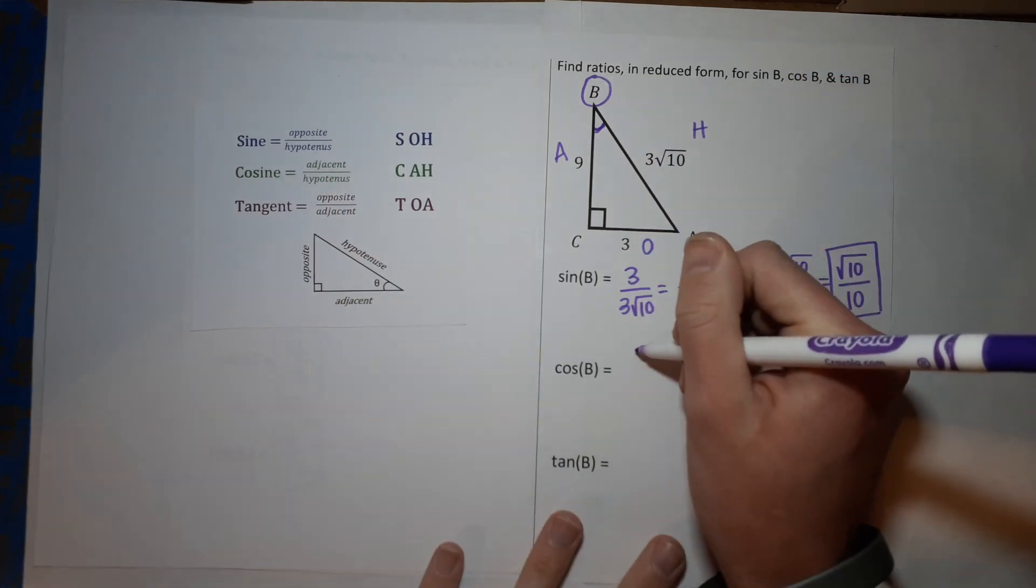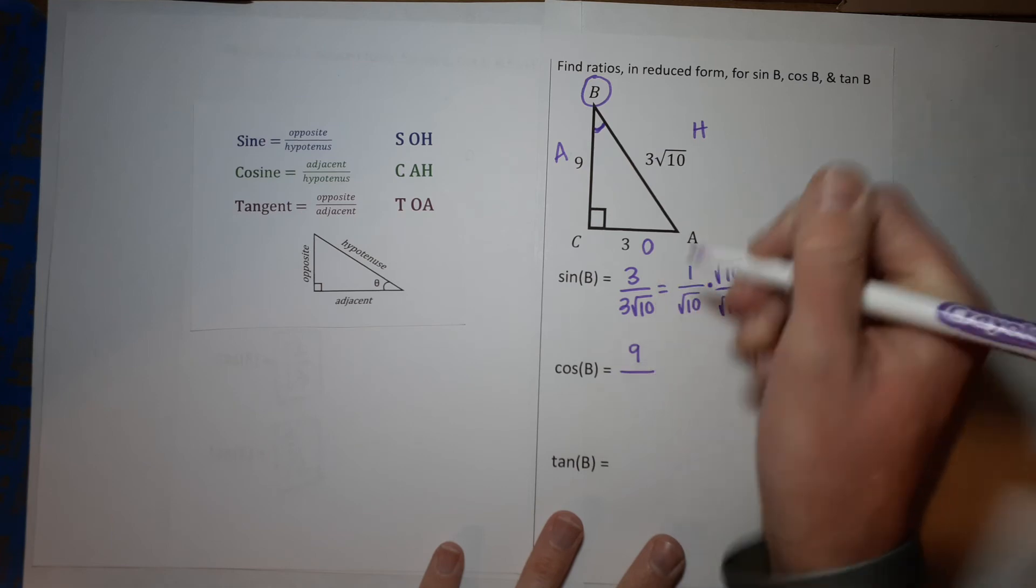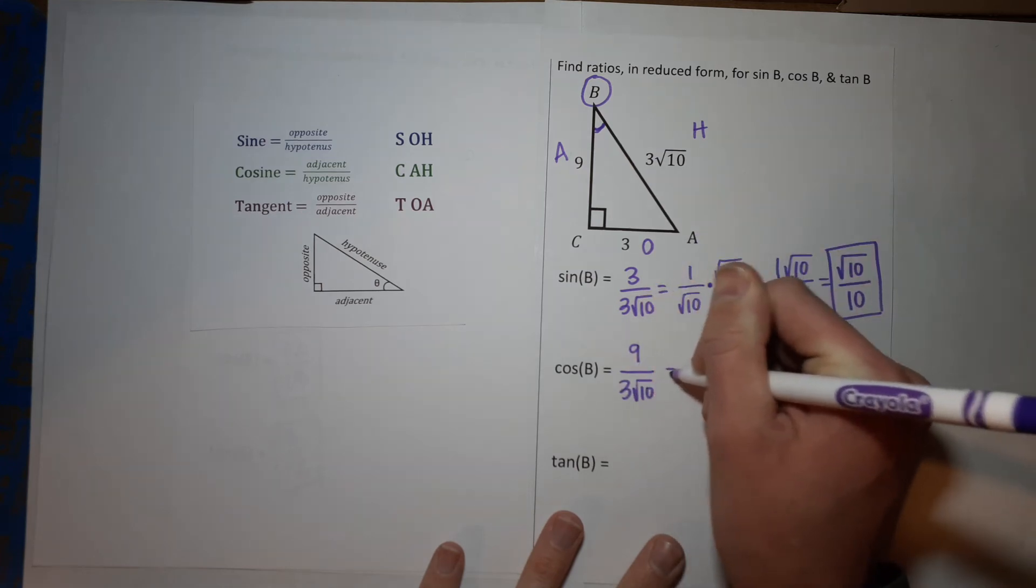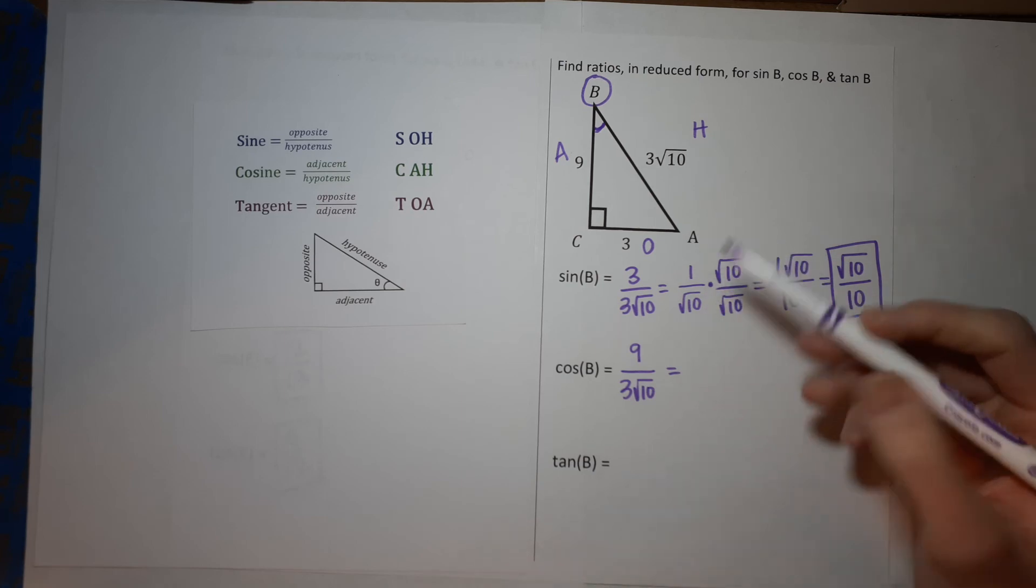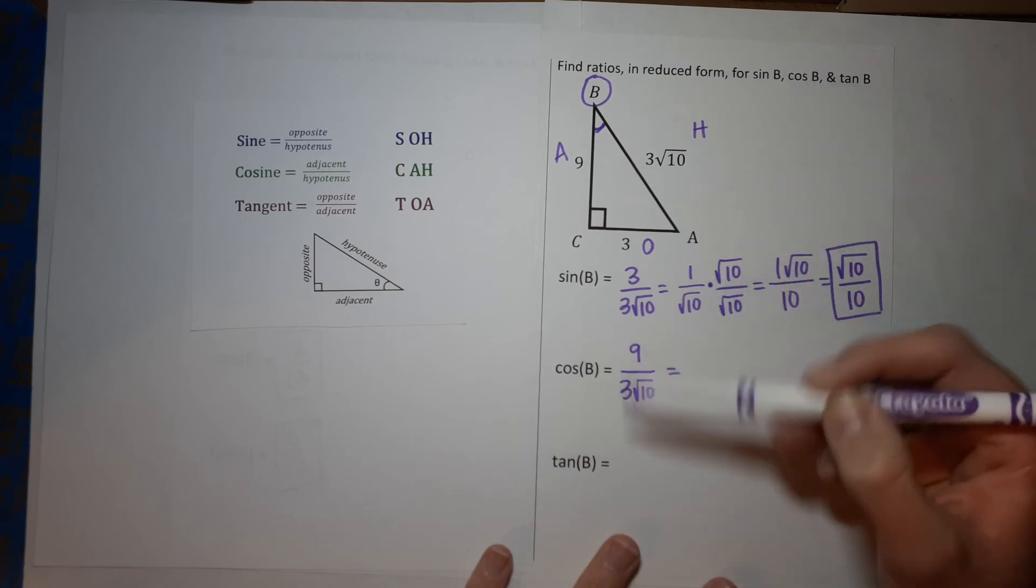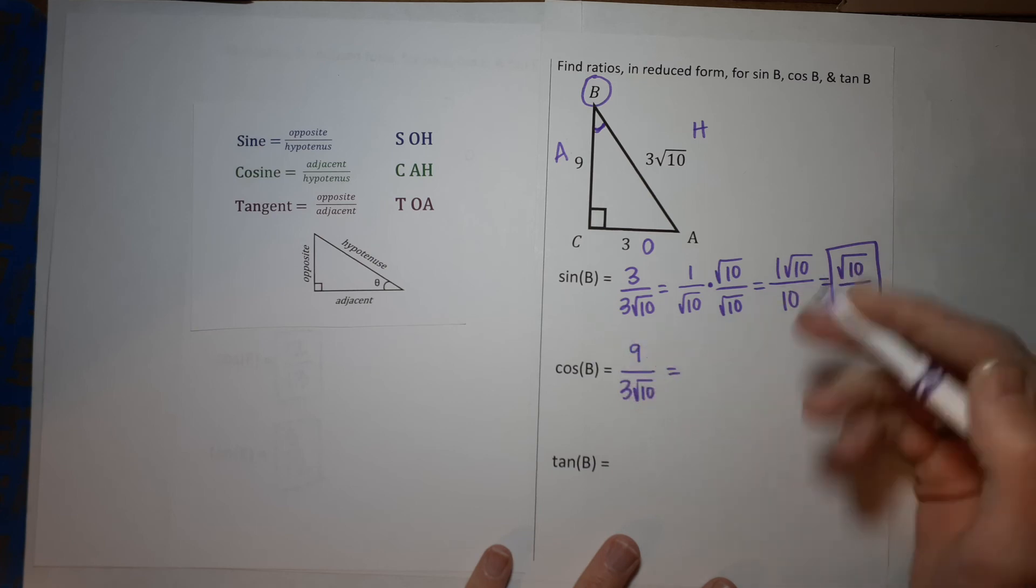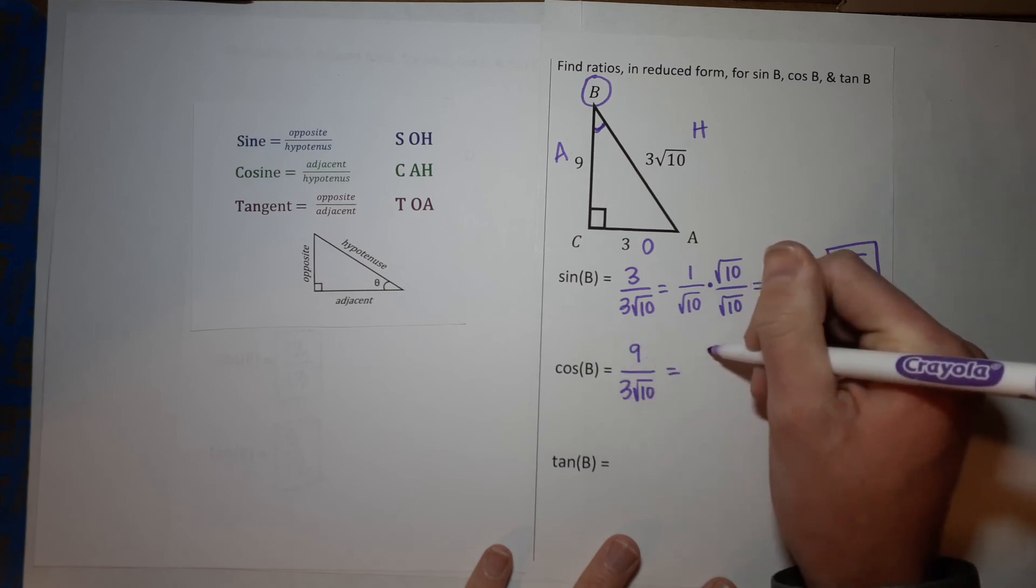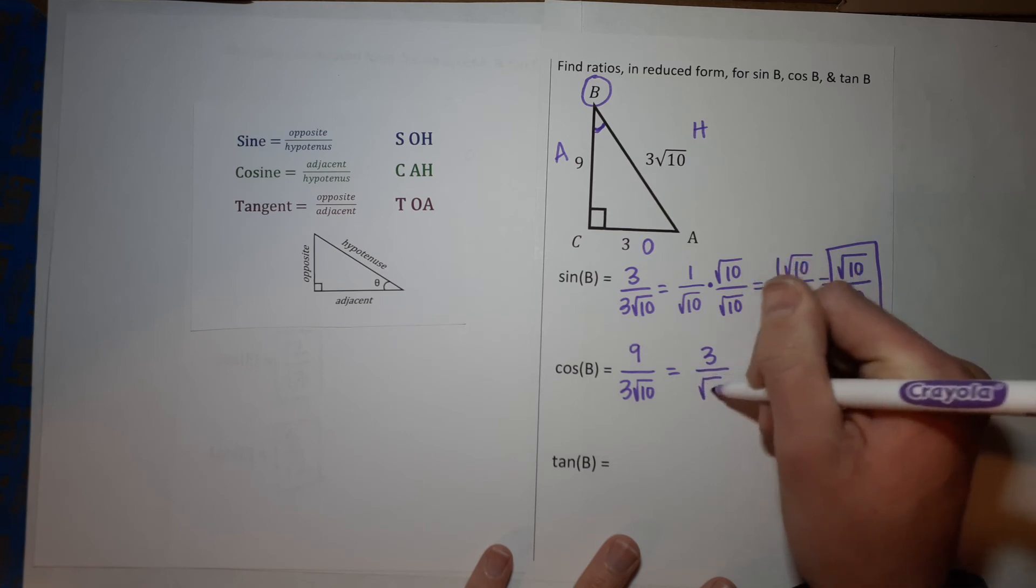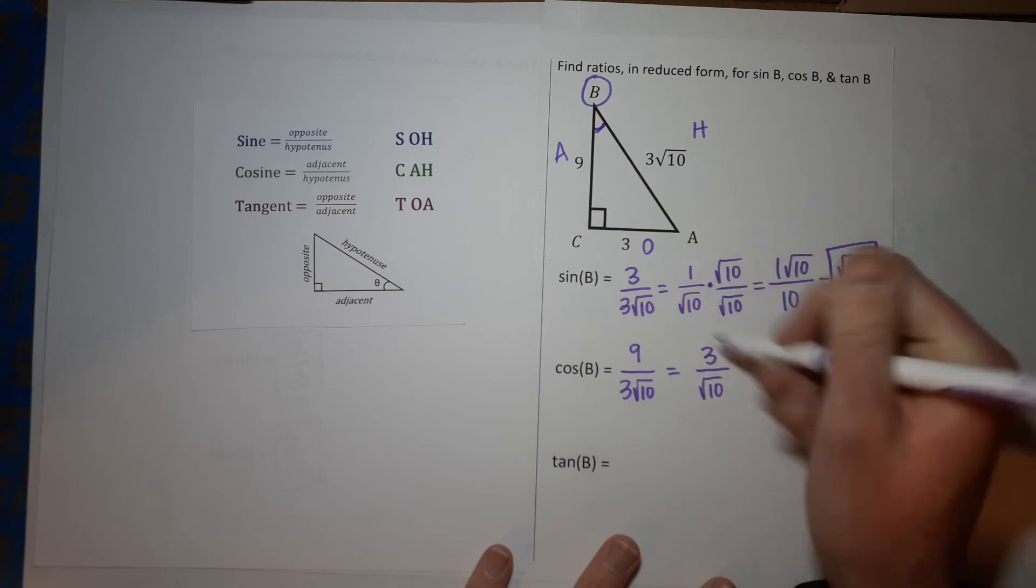Okay, cosine of B. Cosine is adjacent over hypotenuse. So we've got 9 over my hypotenuse is 3 square roots of 10. Alright, I've got two alarms going off for our simplification here. 9 and 3 can reduce, right? 3 goes into 9 three times, so I'm left with 3 over the square root of 10.